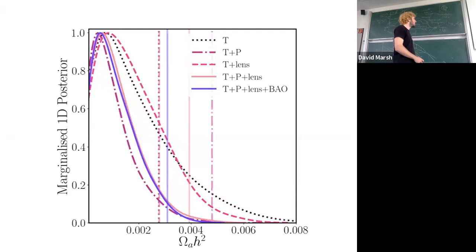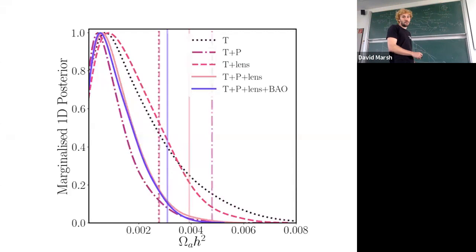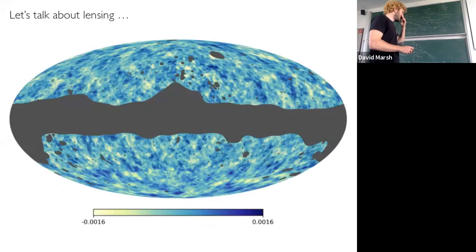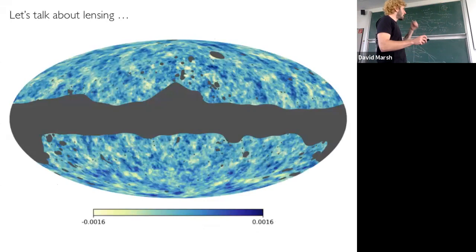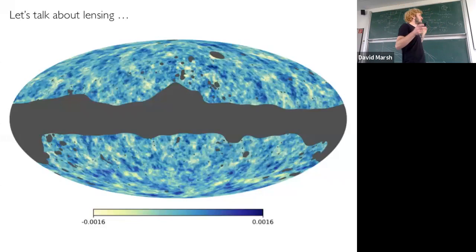When you use total information — temperature, polarization, lensing, and baryon acoustic oscillations — the improvement over temperature alone at 95% limit is about a factor of two. Now let's talk about lensing. This is the reconstructed all-sky map of the lensing convergence from Planck, with galaxies mapped out. I really like this because it's a map over the entire sky on degree scales of the projected dark matter density. But how can we use it to place constraints on physics?